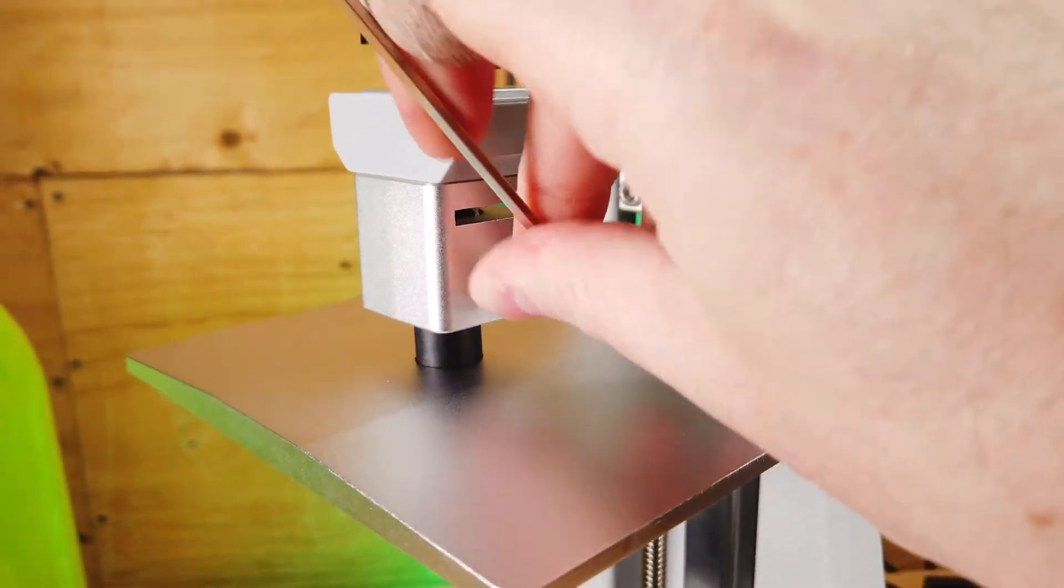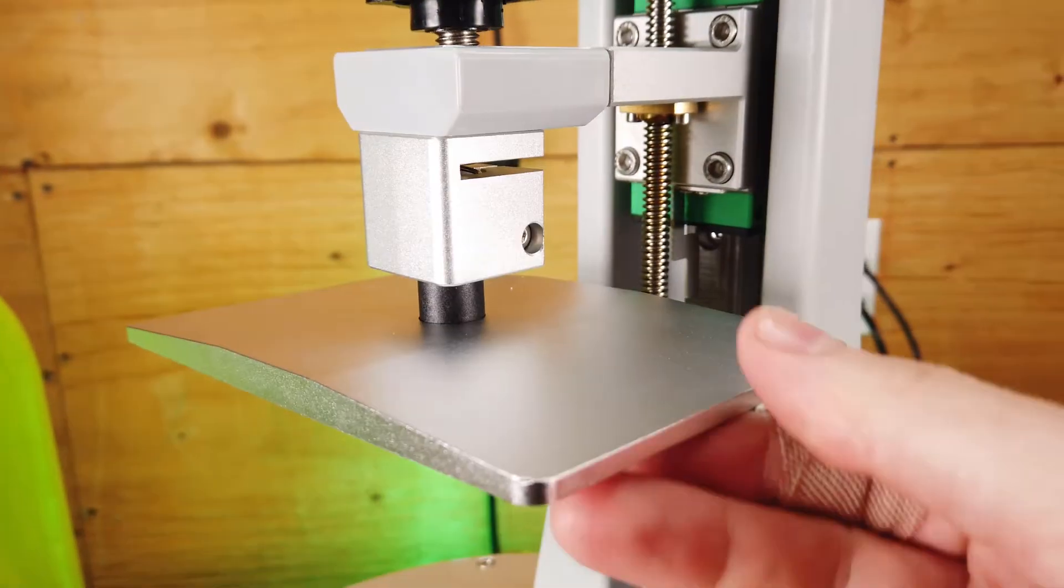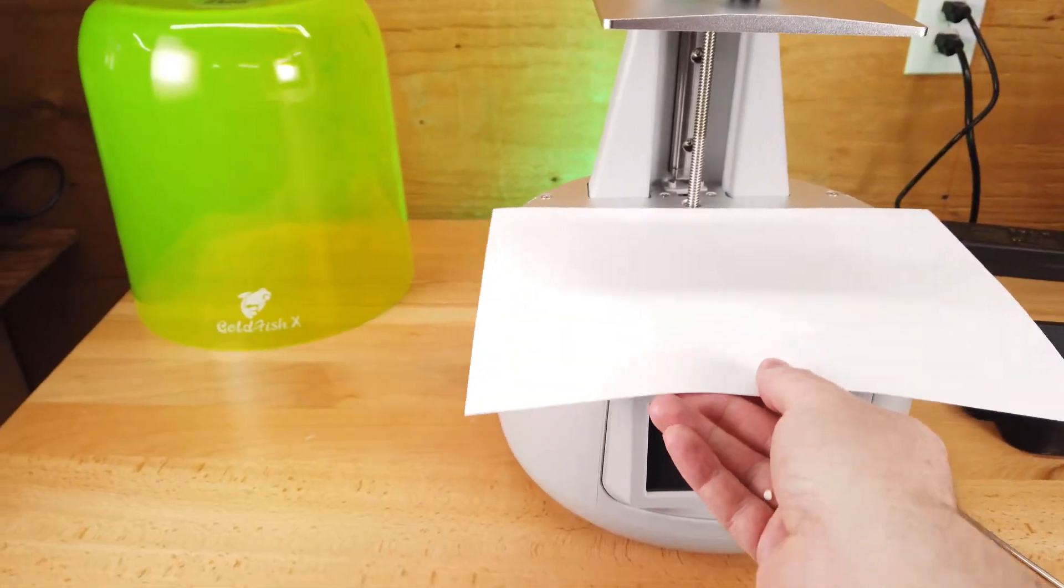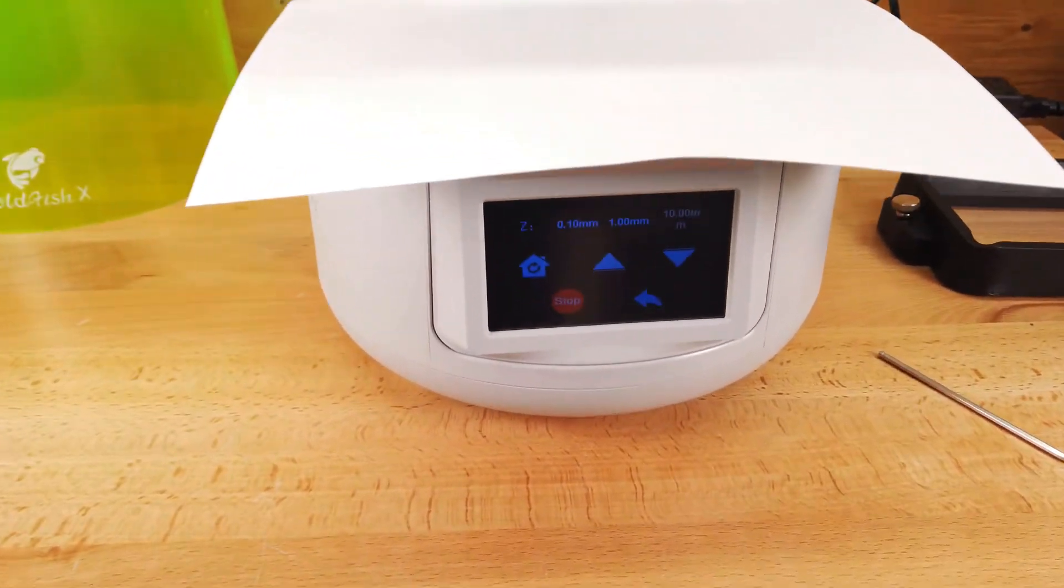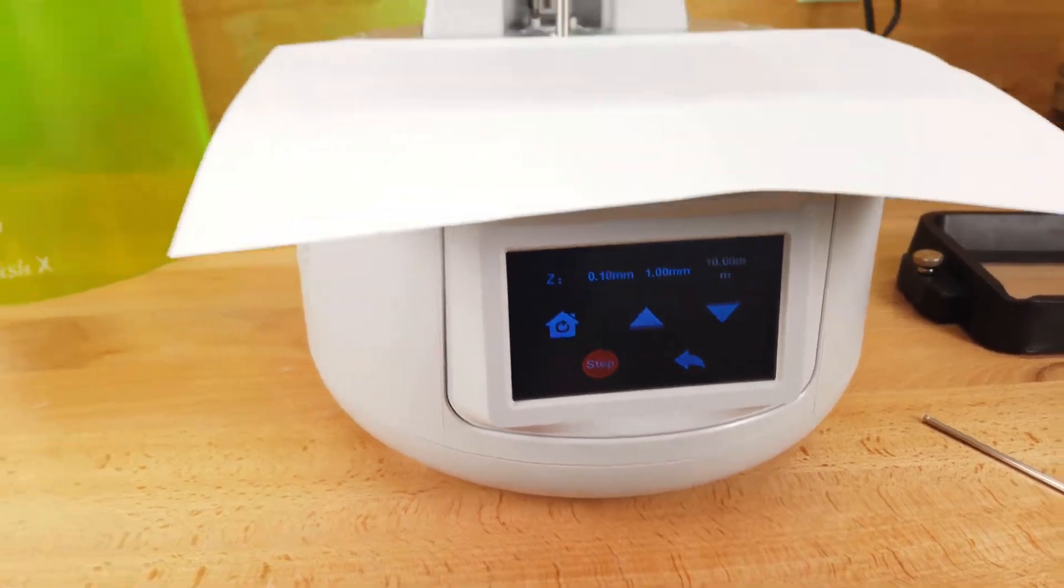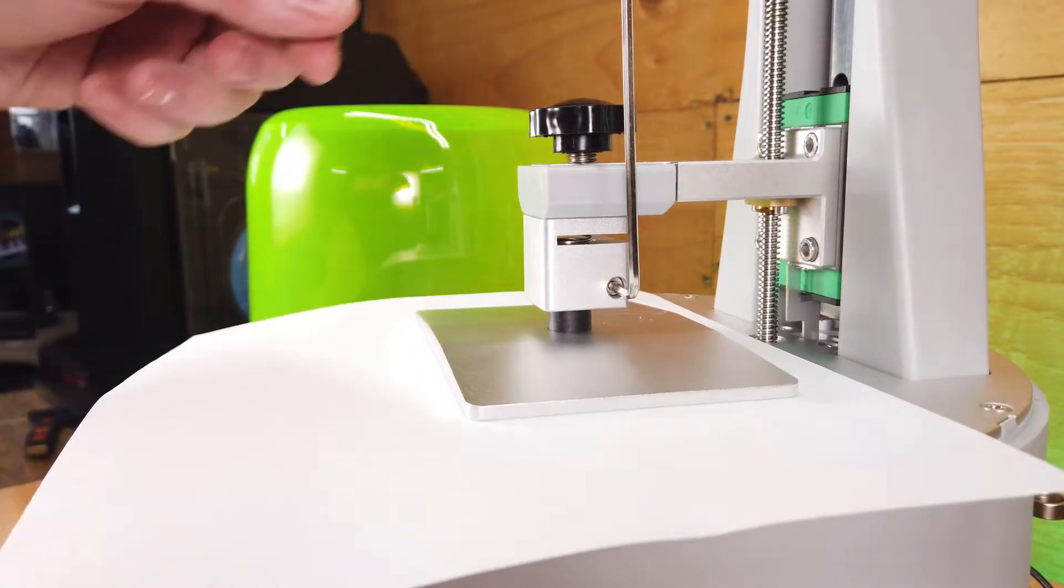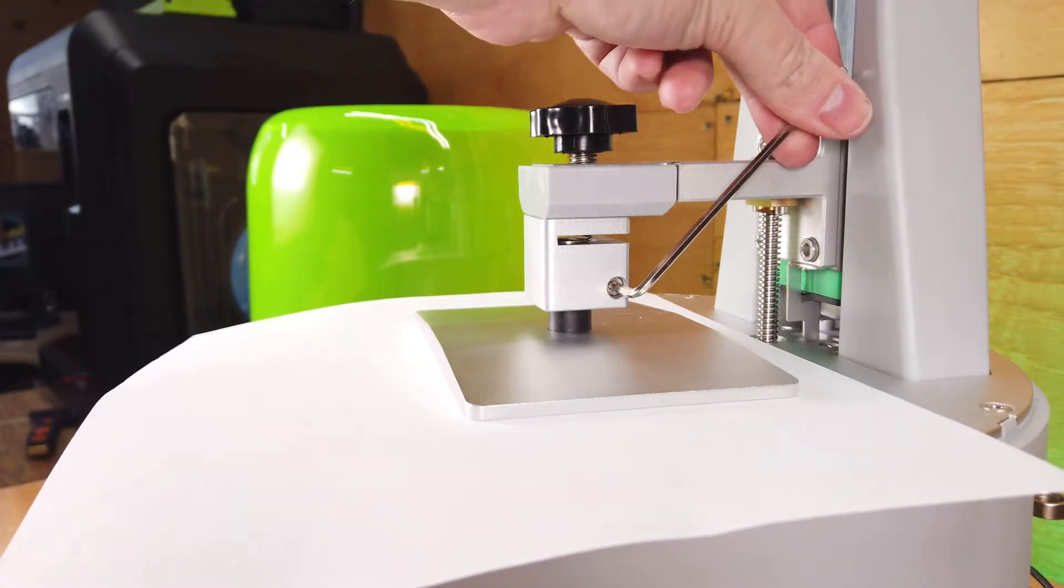I need to level the build plate and I just need to loosen this screw here to allow it to move around. Just take a normal sheet of A4 printer paper and place it over the screen and then just home the build plate. This will lower everything down and make sure your build plate is perfectly gapped. Then you can tighten it down and you're pretty much good to go.